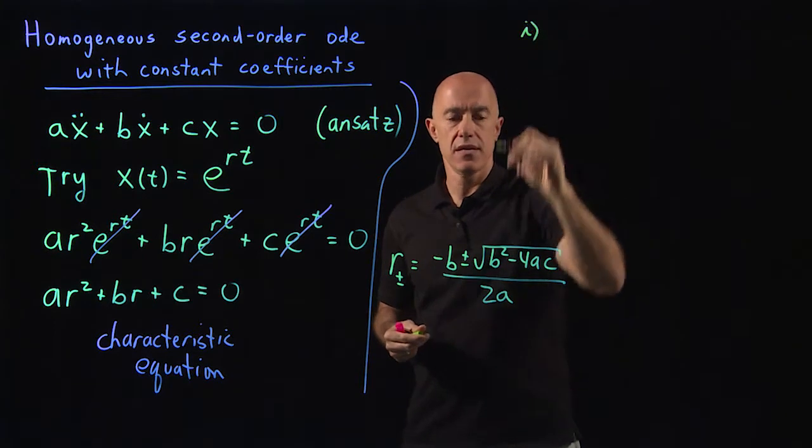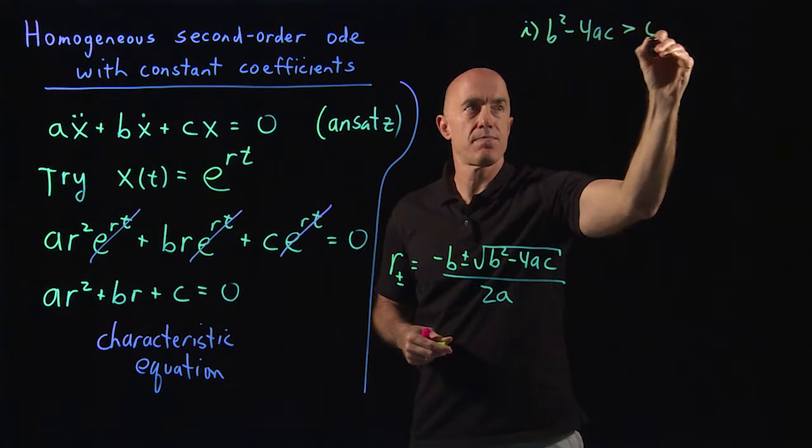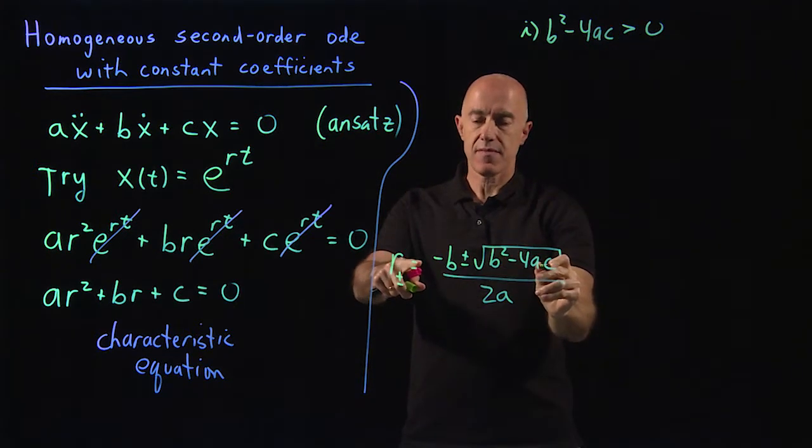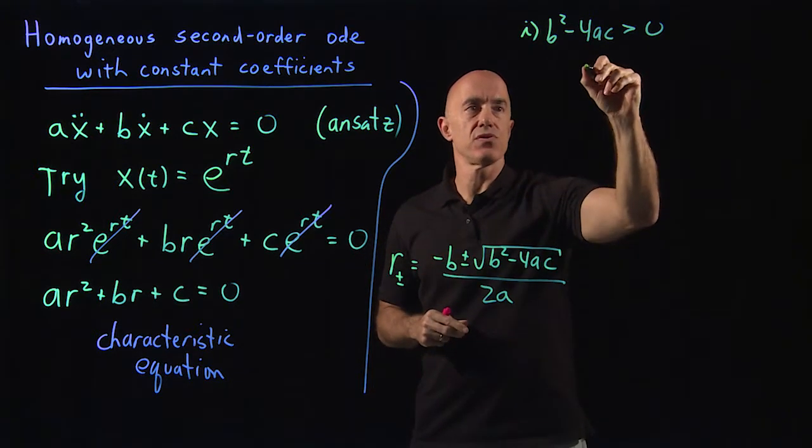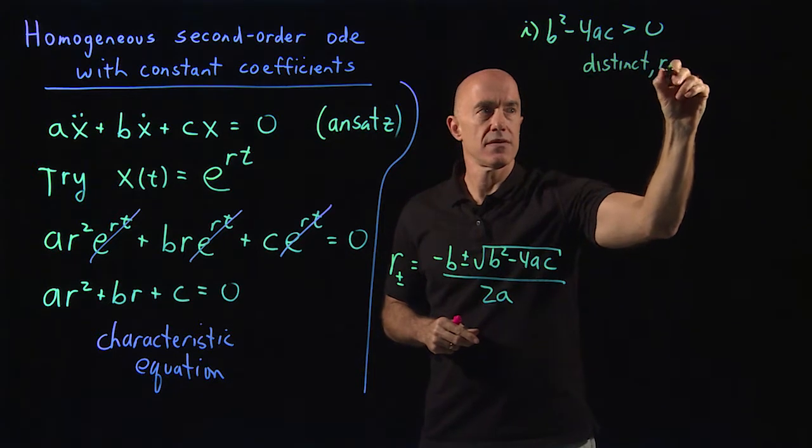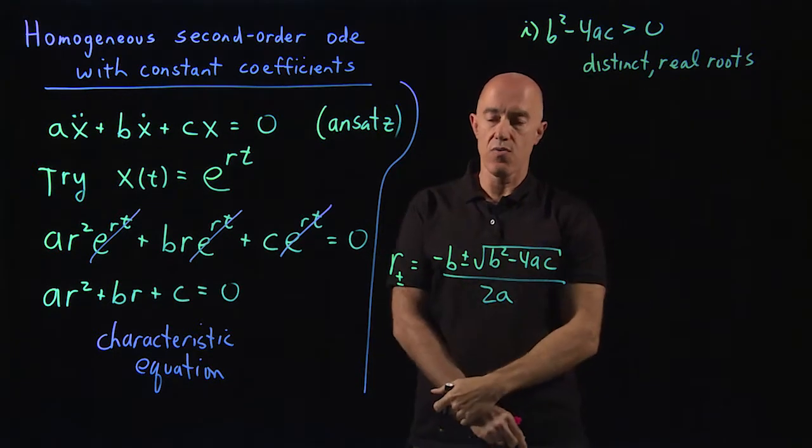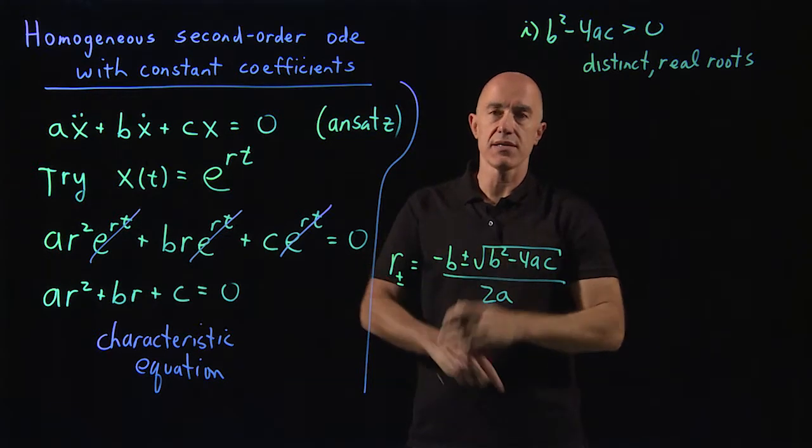The first one is b squared minus 4ac might be positive. Then we have distinct real roots. So we have two roots, r1 and r2 or r plus and r minus.